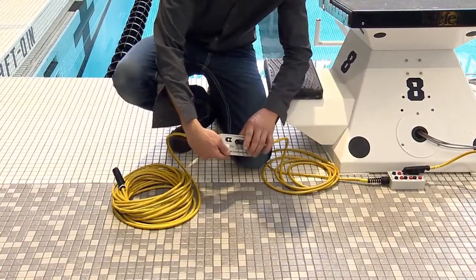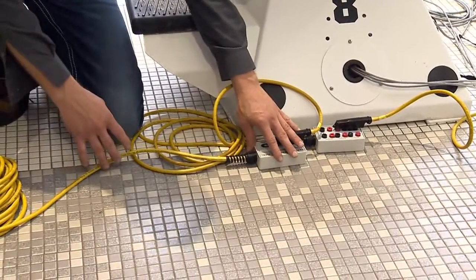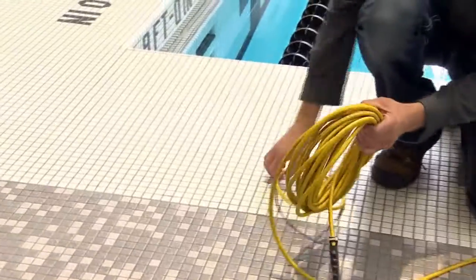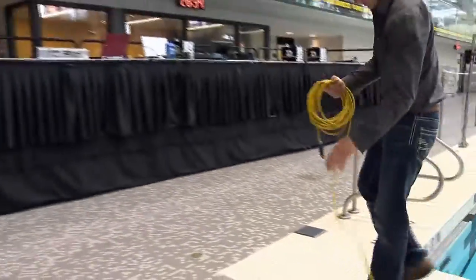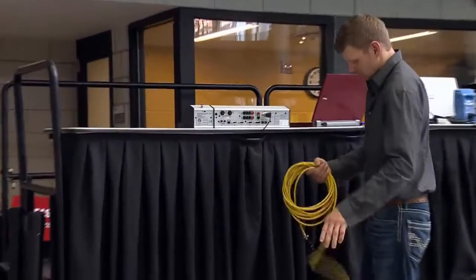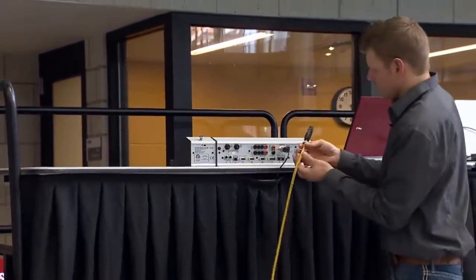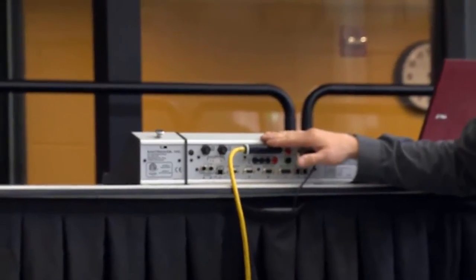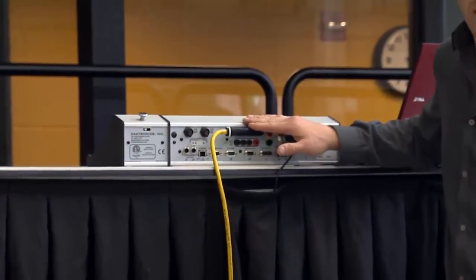You will connect your lane module to the deck extension and place it behind the starting block or under a starting block. You will then send the deck extension to your Omnisport timer. Here I'm plugging this into the near end since this is our near end starting block.